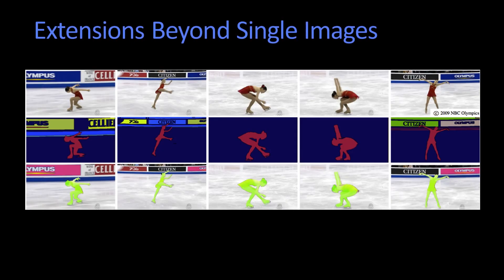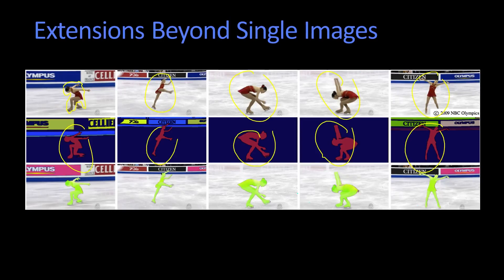Segmentation extends beyond just single images, of course. Here we're taking a look at video — this is work that comes from here at Georgia Tech, done by Professor Irfan Essa and Professor Jim Rehg's group. There's an ice skater going along, and the ice skater is being segmented. It's not always so easy because here it's showing you against just ice, but obviously it pulls it out, and you want to be able to extract it carefully.